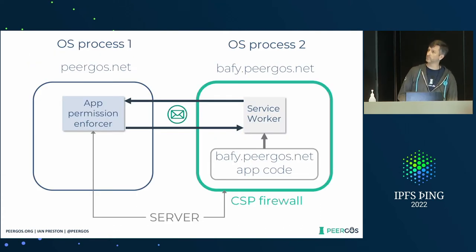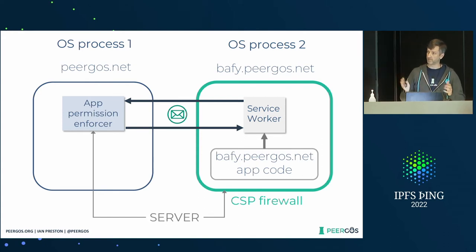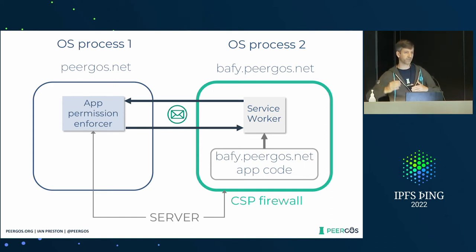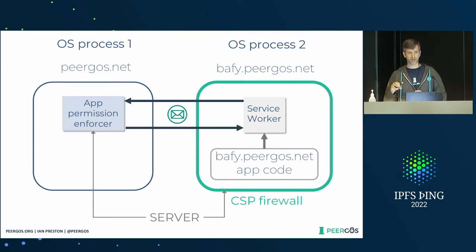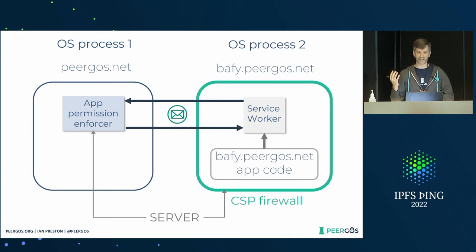This is the execution model. The idea is your end user is logged into Pygos in the browser — that's the main tab on the left, the main context — and that's the thing that can get data from the network. We don't do peer-to-peer stuff directly in the browser for privacy reasons, so we don't broadcast your IP address. That's handled by the server, but the server is treated as untrusted, so everything the client gets — whether it's a hash or a signature or whatever — is checked in the client code.